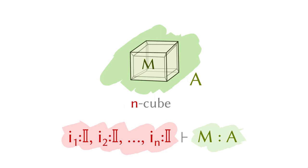So you start with an interval, and a square, and a cube, and a four-dimensional cube, and so on. Mathematicians are not very creative in coming up with names, so they just call the N-dimensional cubes as N-cubes.